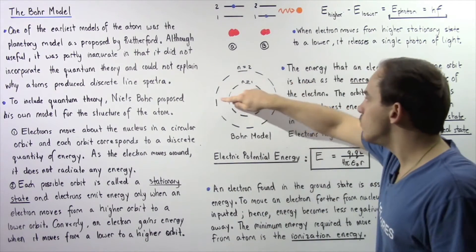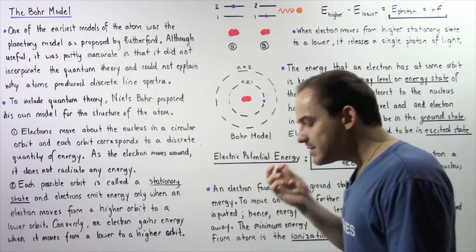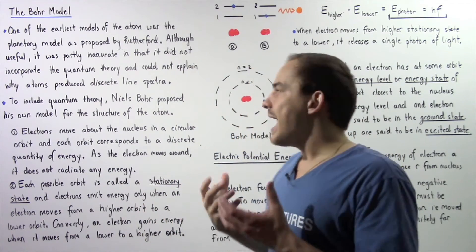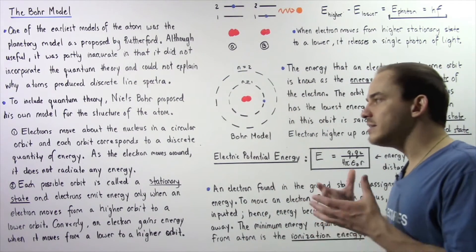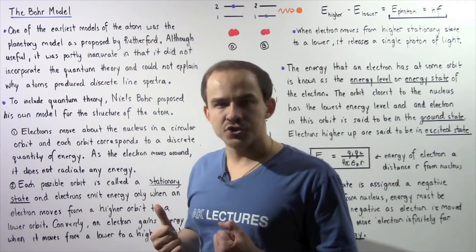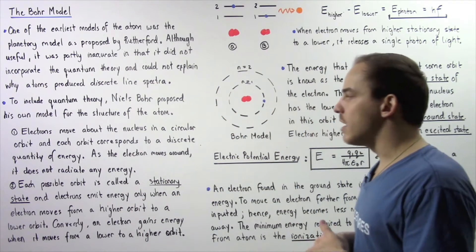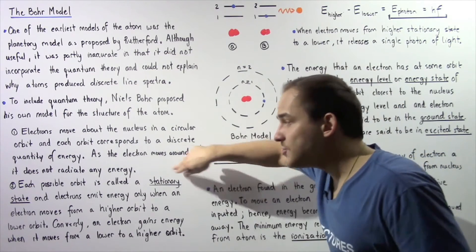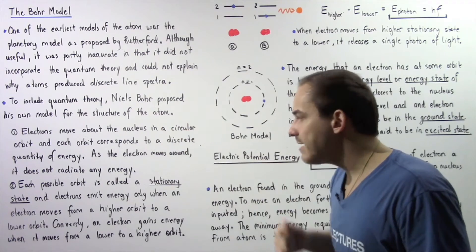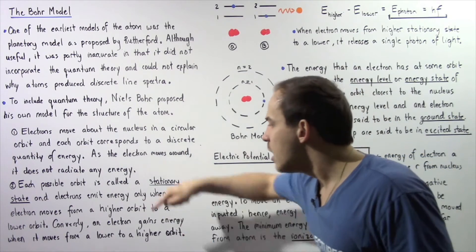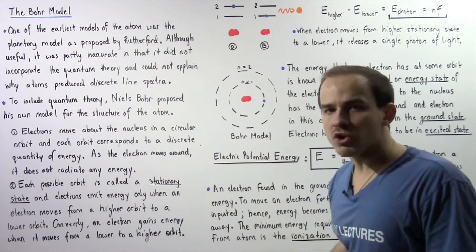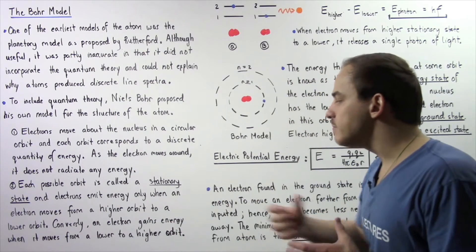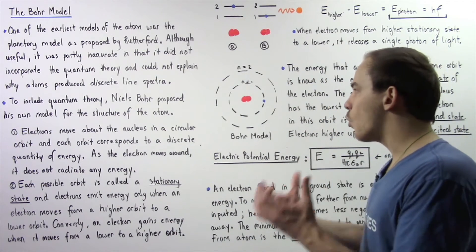As the electron moves along the orbit, it does not radiate any energy — it does not lose or gain any energy. Statement two explains how an electron loses or gains energy: each possible orbit is called a stationary state. Electrons emit energy only when an electron moves from a higher orbit to a lower orbit, and conversely, an electron gains energy when it moves from a lower orbit to a higher orbit.